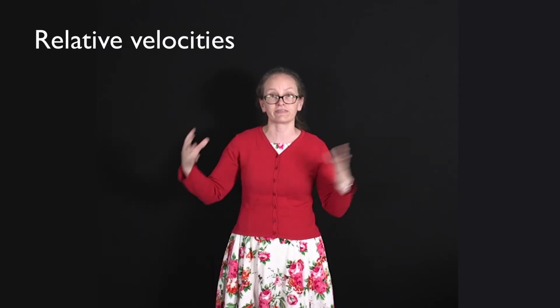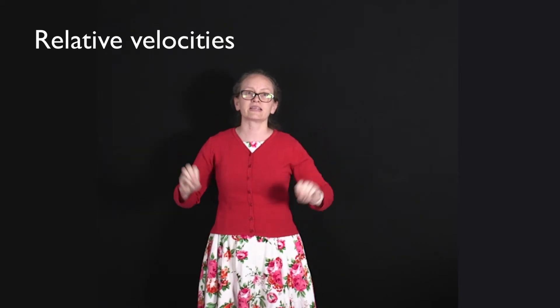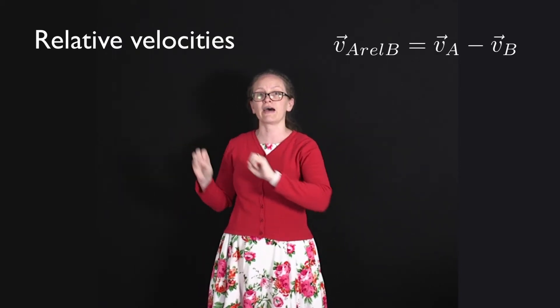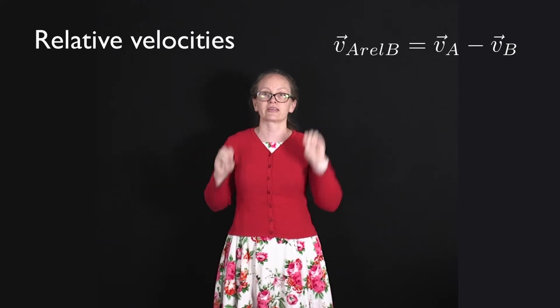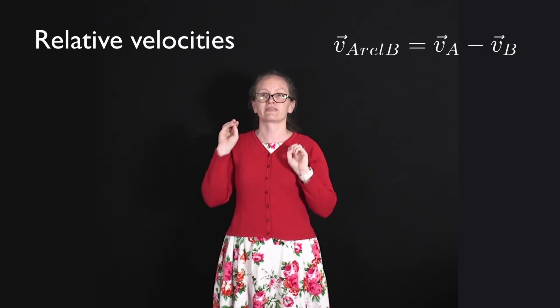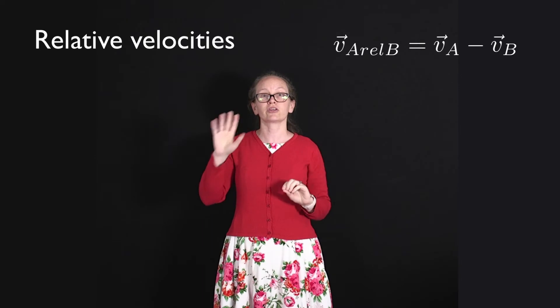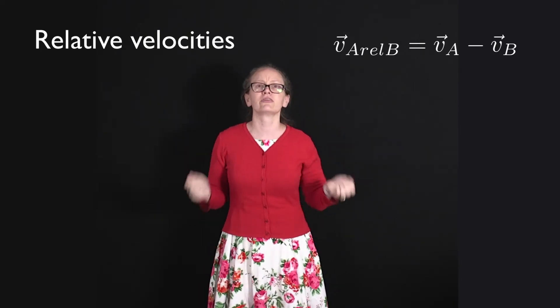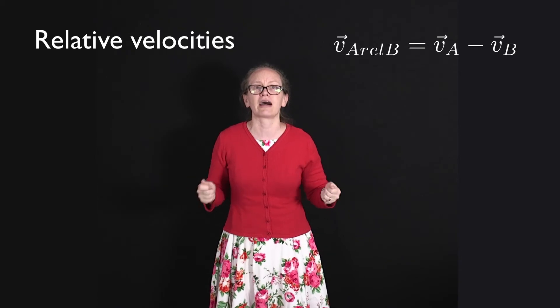Sometimes in physics we want to change the reference frame of a problem so that we can work out how something is moving in a different reference frame. What we're about to do is show that if we want to move from one reference frame to another, we can use the equation that the velocity of a relative to b is equal to the velocity of a minus the velocity of b. So let's have a look at how this can be derived.